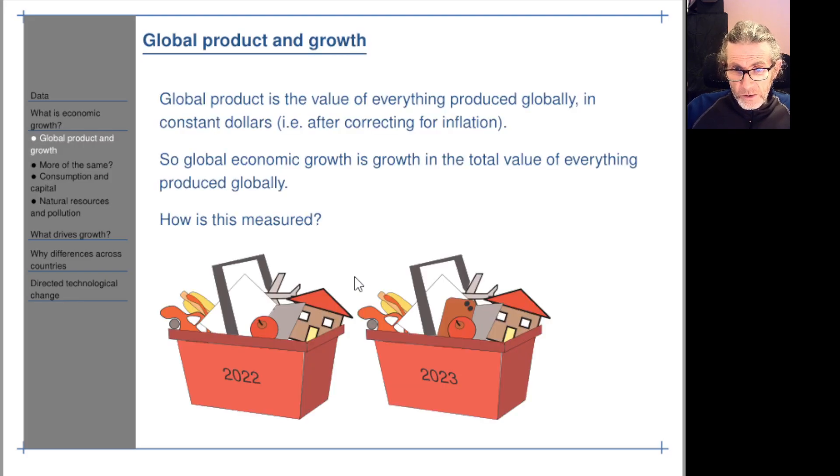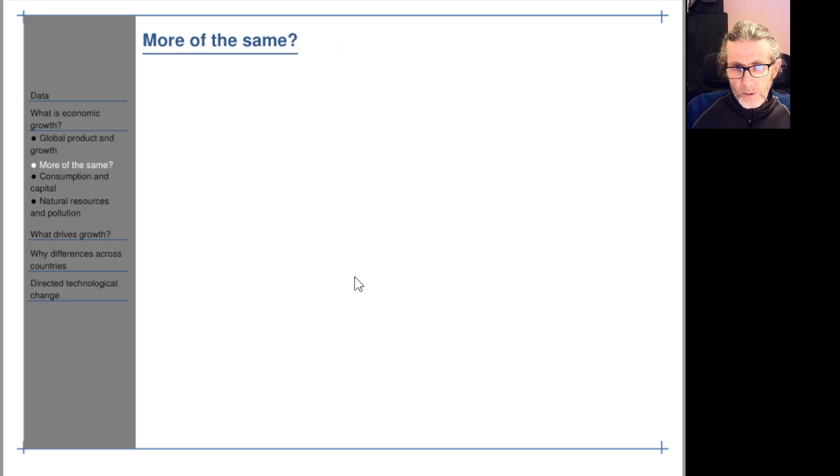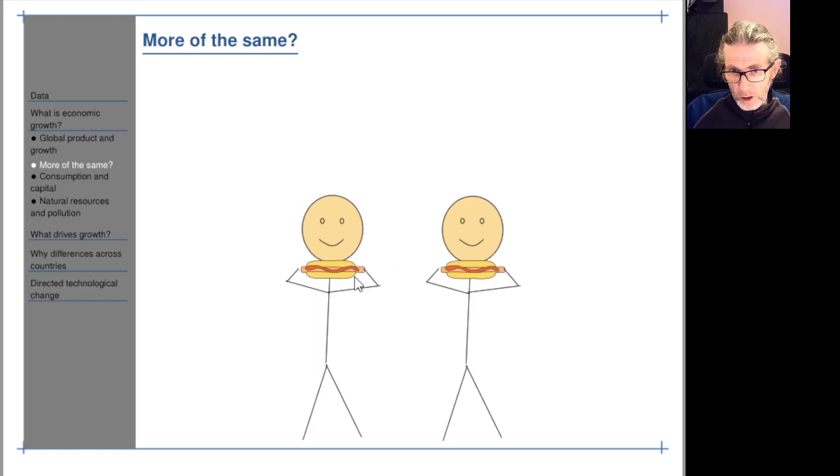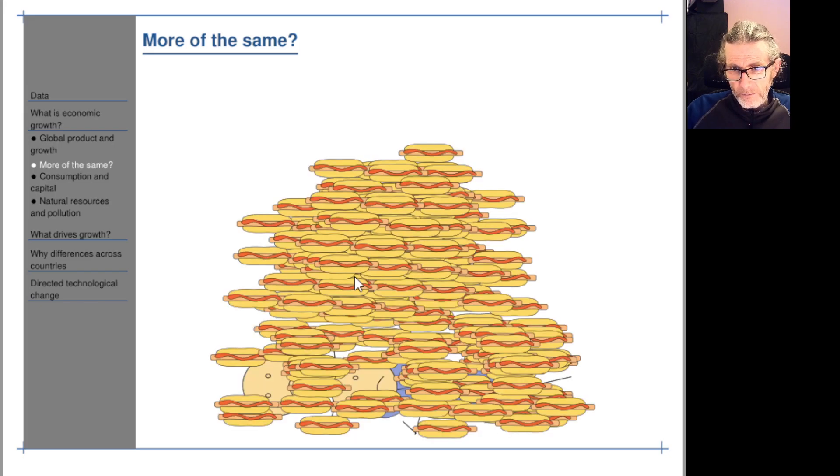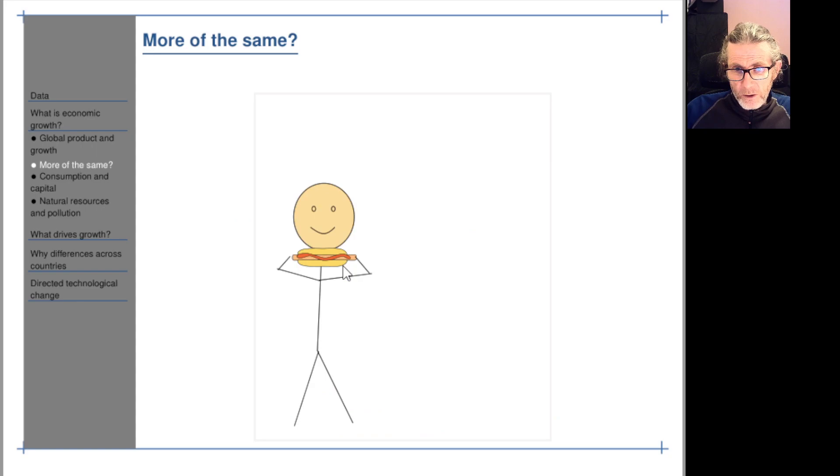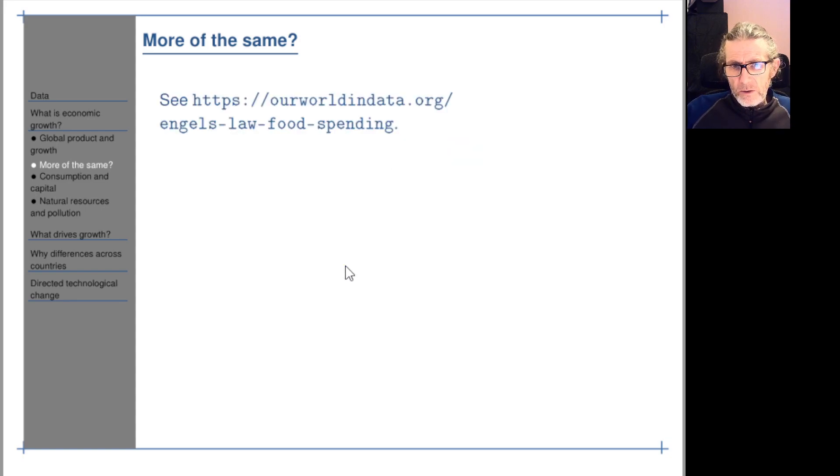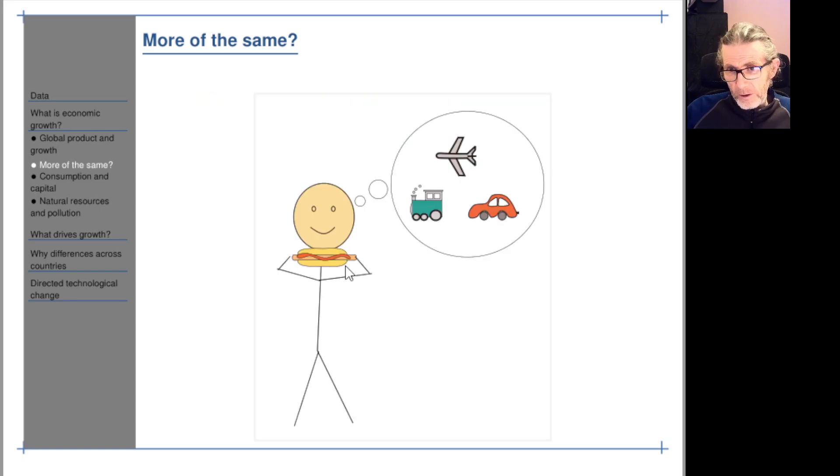What does growth consist of? What actually happens when economies grow? Well it's not that we produce more and more of the same stuff. Sure we do produce more of some things but that's not the fundamental thing that happens when economies grow. It's more that we consume different things, higher quality things, stuff that we're more willing to pay for than last year's stuff. It might be a bigger physical quantity, it might not.